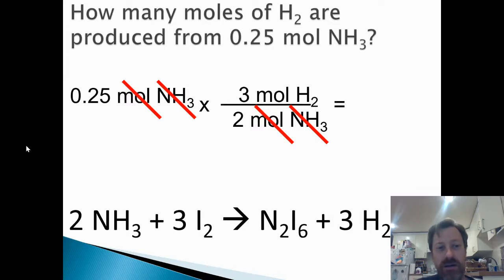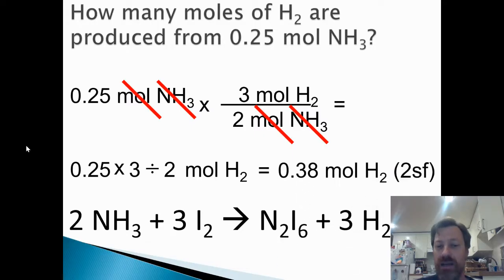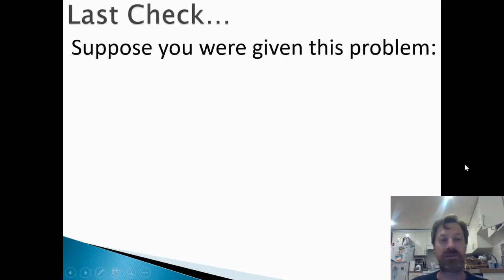So how do we type this into the calculator? You always put your given first. So 0.25 times 3, because that's on top, divided by 2, because that's in the denominator. And we multiply that out. Don't forget your unit, moles of H2 now. Multiply that out, we're going to get 0.38 moles of H2. That's the two significant figures.